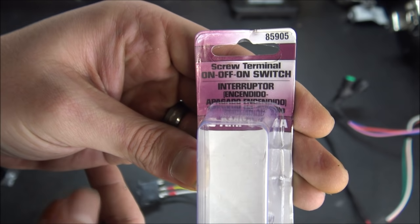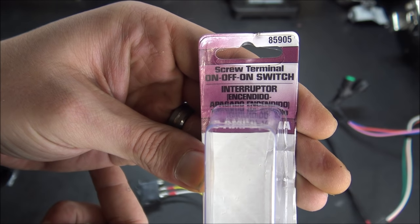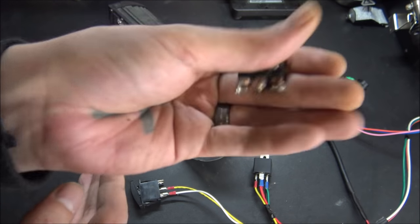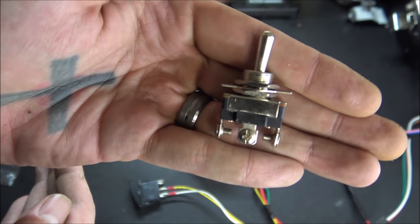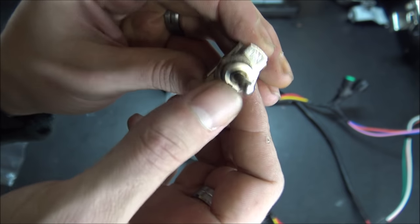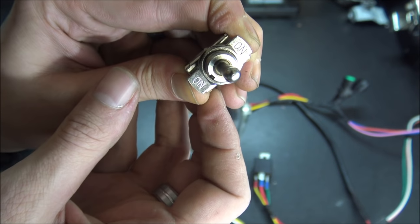This is the packaging that the three-way switch came in. I just picked this up at AutoZone. It's an on-off-on switch. Here's the switch itself. You've got three positions. You have two on positions up and down, and in the middle is off.